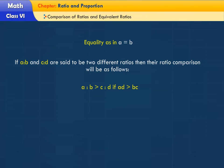A ratio B is greater than C ratio D if AD is greater than BC. A ratio B is less than C ratio D if AD is less than BC. A ratio B is equal to C ratio D if AD is equal to BC.